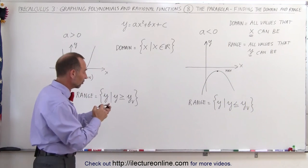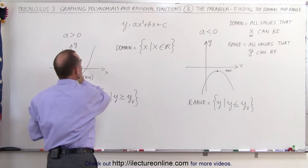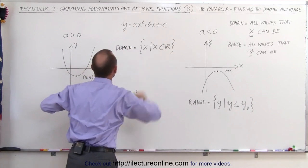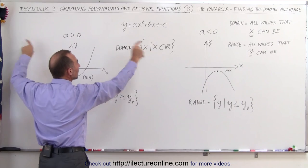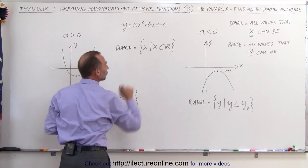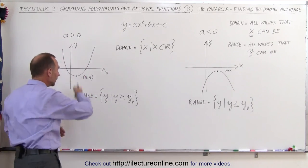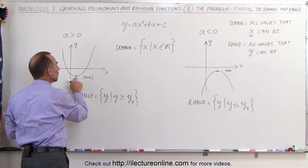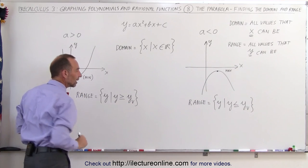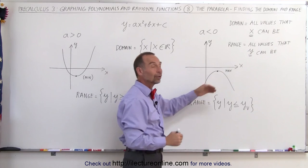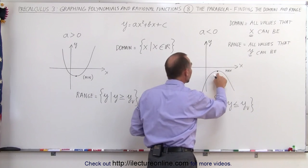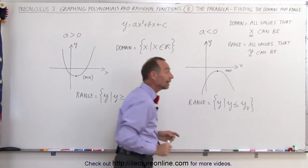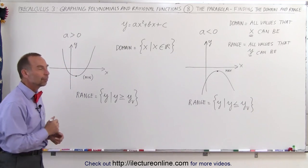So in the case of domain, there's absolutely no restriction in the x-direction. The parabola goes wider and wider as you go up, extending to positive infinity on the right and negative infinity on the left, so x is an element of the reals. But for the range, all values of y must be greater than or equal to the y-coordinate of the vertex for an upward-opening parabola, or less than or equal to the y-coordinate of the vertex for a downward-opening parabola. And that's how we find the domain and range of a parabola.